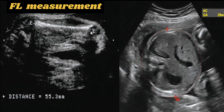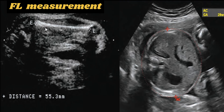Now we are going to discuss the measurement of femur length. The femur length is measured by positioning the calipers on the edges of the proximal and distal portions of the diaphysis. When possible, the femur should be placed perpendicular to the ultrasound beam. The epiphyseal cartilage, visible here, should not be included in the measurement.